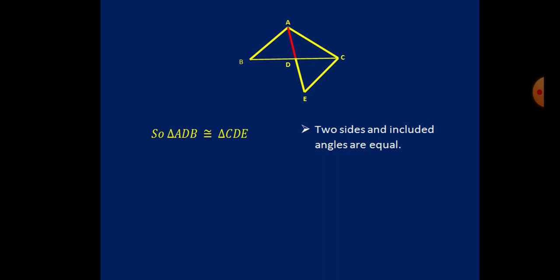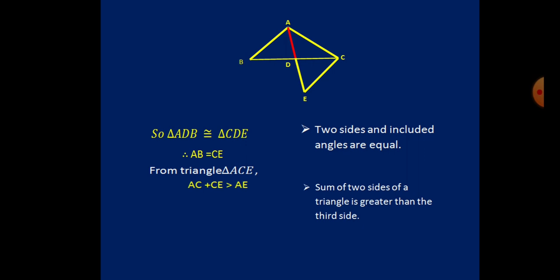So triangles ABD and CDE are congruent by SAS, and therefore AB equals CE. Now look at triangle ACE: the sum of two sides must be greater than the third side, so AC + CE > AE.